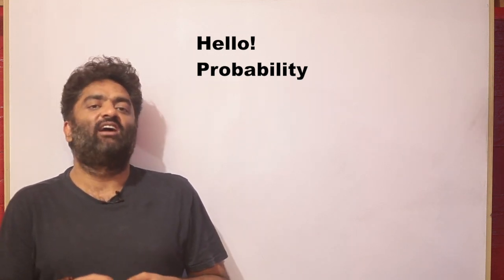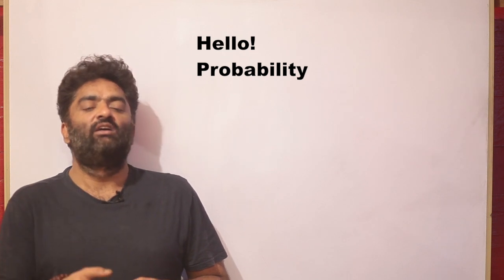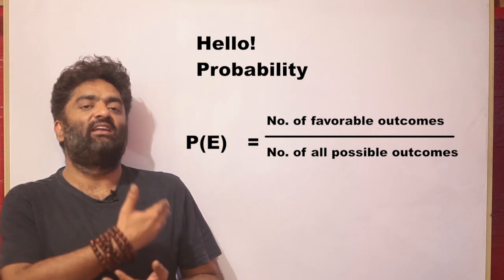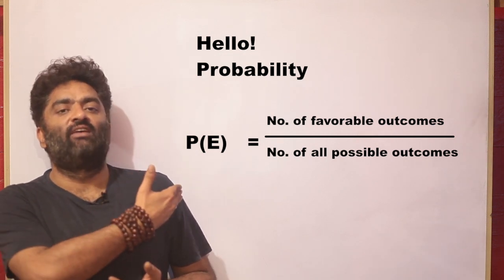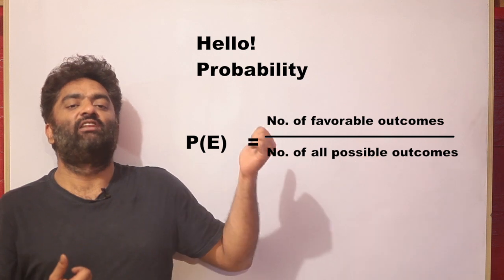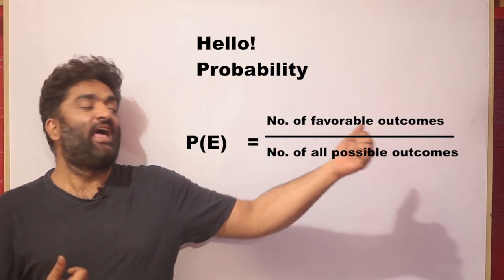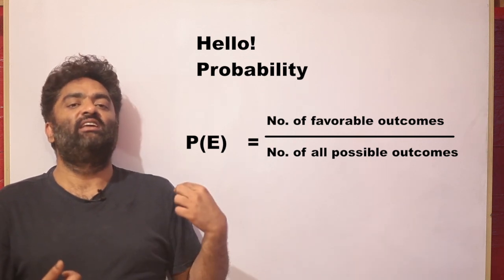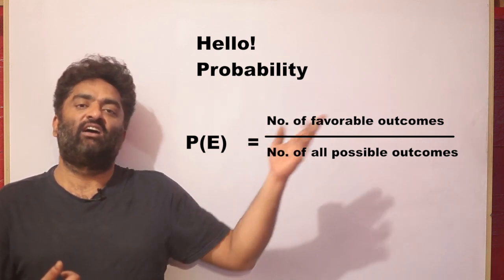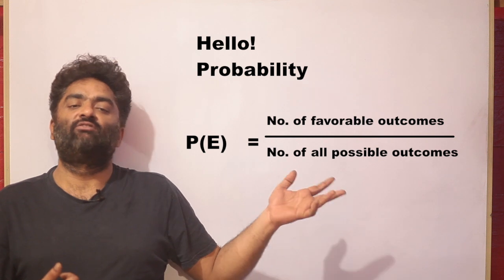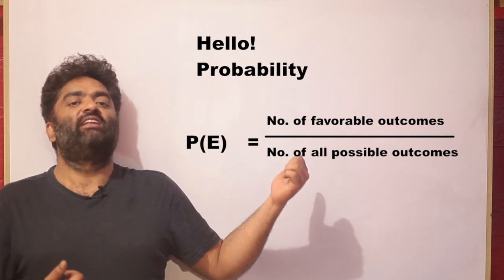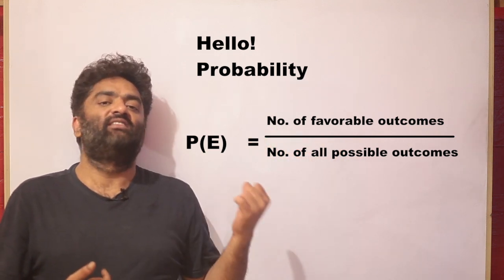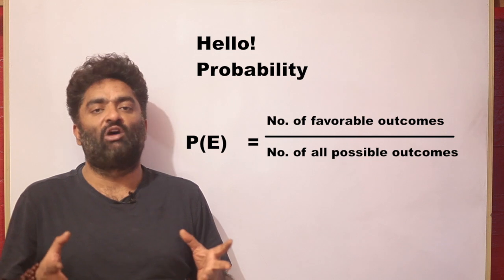Let us start with the probability formula. Probability of an event is: in the numerator, the number of favorable outcomes, and in the denominator, all possible outcomes. So probability is a fraction, a ratio — favorable outcomes over all possible outcomes.